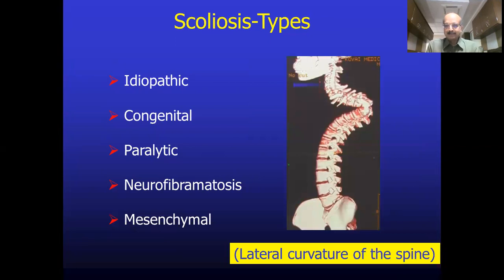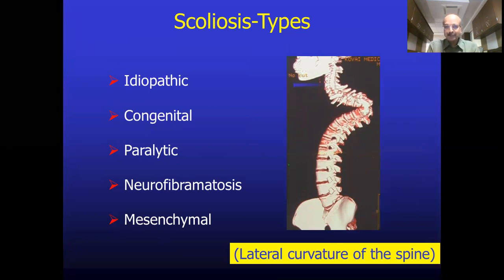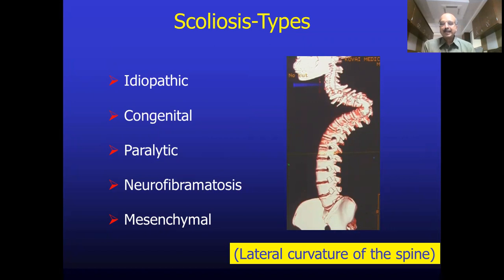What is scoliosis? The spine has two normal curves: the posterior curve of the thoracic spine, called thoracic kyphosis, and the lumbar lordosis. These two spinal curves are normal and seen in every individual. However, when you see a patient from the front or the back, you do not see any lateral curvature. The lateral curvature of the spine is called scoliosis, which is primarily divided into structural scoliosis, which needs surgical correction, and non-structural scoliosis, which does not.